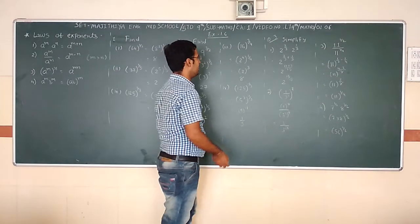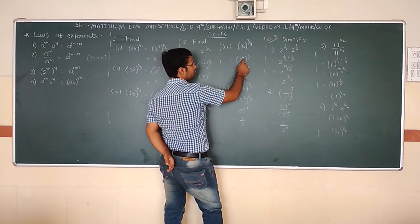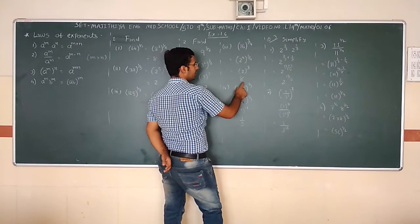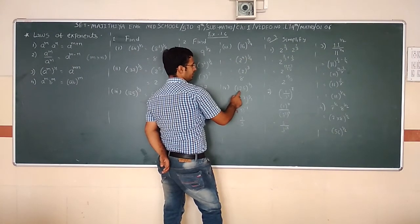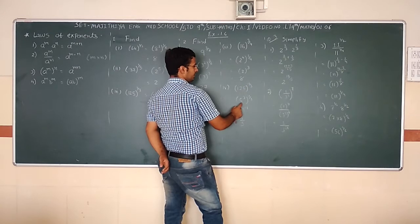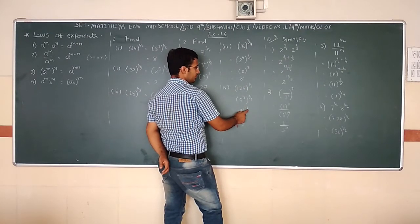16^(3/4): 16 means 2^4, so (2^4)^(3/4) = 2³ = 8. Next, 25^(-3/2) = (5²)^(-3/2) = 5^(-3).